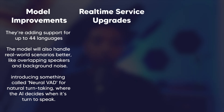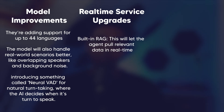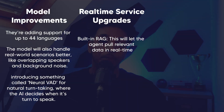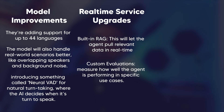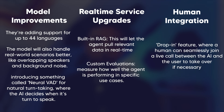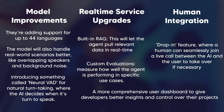The second area is real-time service upgrades. They're working on a built-in RAG system that will let the agent pull relevant data in real time for more intelligent responses — currently we have to use a third party like Pinecone or Supabase, which takes a bit longer. They're also working on custom evaluations: tailored metrics to measure how well the agent performs in specific use cases, which is super valuable for building production-ready voice AI agents. Lastly, they're working on human integration — a drop-in feature where a human can seamlessly join a live call between the AI and the user to take over if necessary, plus a dashboard to give developers better insights and control over their projects.